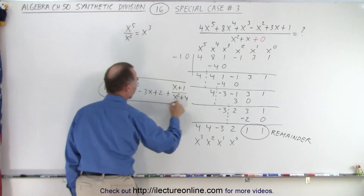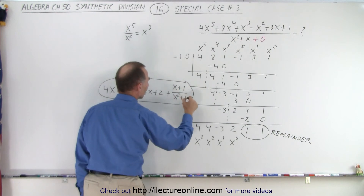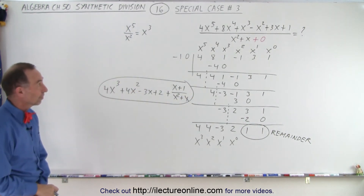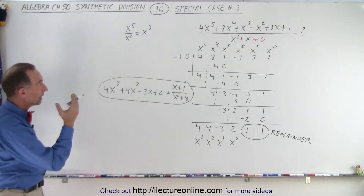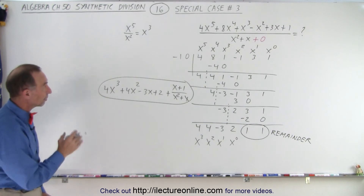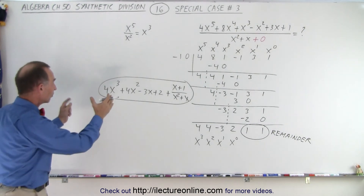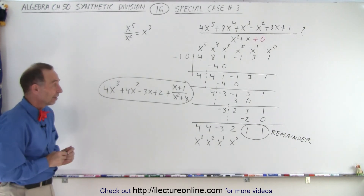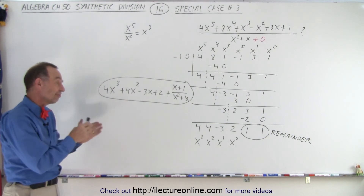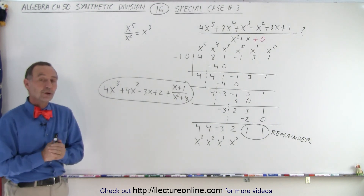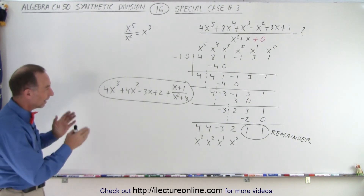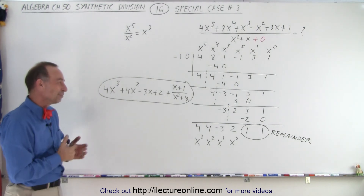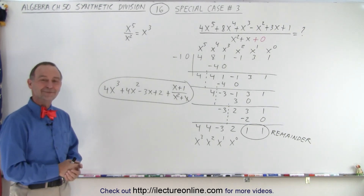And this becomes the solution of our division. So when we take that numerator divided by x squared plus x, we get the following result. It's synthetic division — it makes it fairly straightforward. You just have to remember the rules, and this is how it's done. Once you see the pattern, it's not so bad.